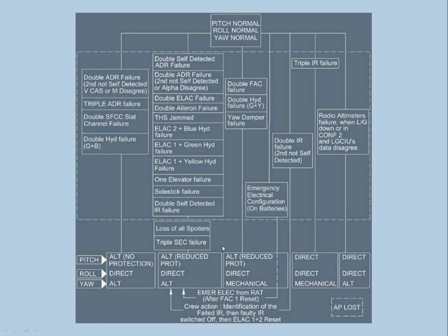This master diagram covers the flight control laws. At the top, pitch, roll, and yaw are in normal law. With certain failures — double ADR failure, double FACS failure, double IR failure — pitch will go to alternate with no protection, roll to direct, and yaw to alternate. With other failures such as side stick failure, you will go into alternate with reduced protection, roll will be direct, and yaw will be alternate.